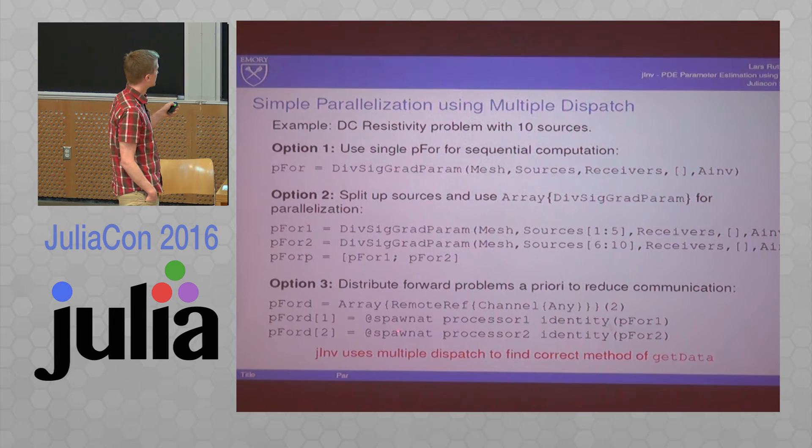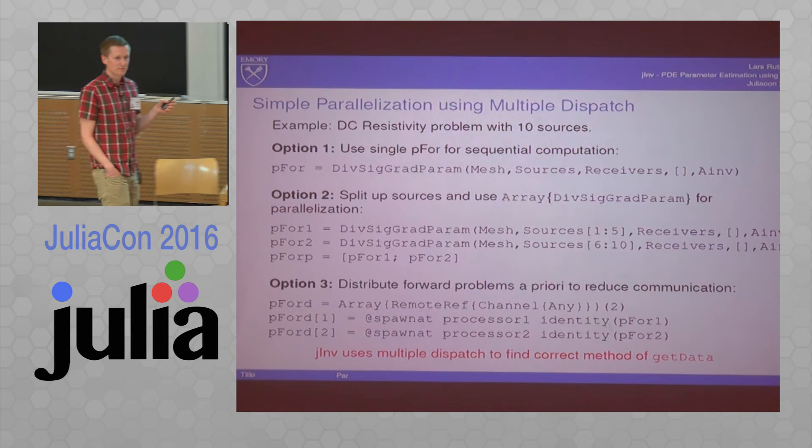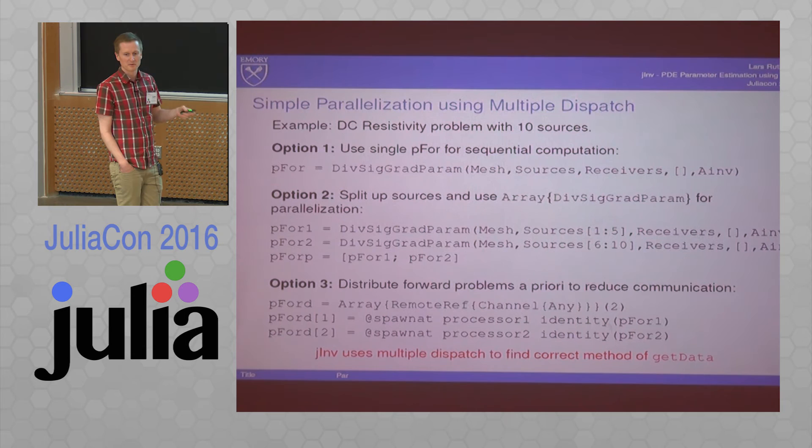Or you put them into an array of remote references, and then everything is pre-allocated. This is kind of the beauty of using Julia, because now, if you have your own problem, you just define one of those params, stack them in a vector, and everything is going to be parallelized.